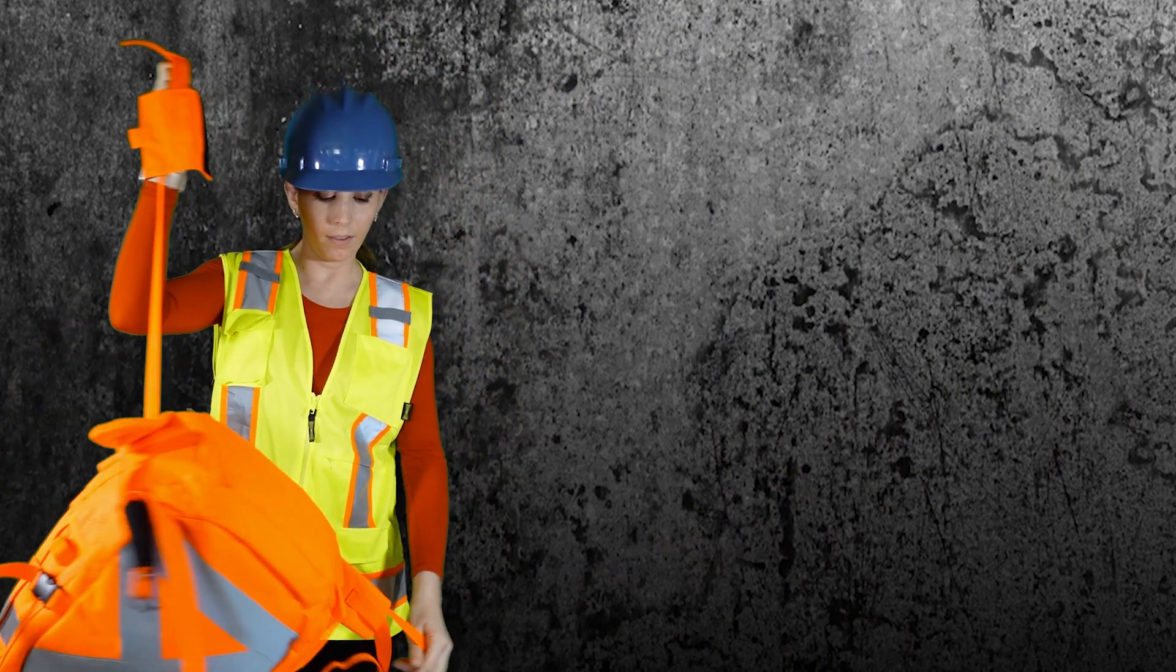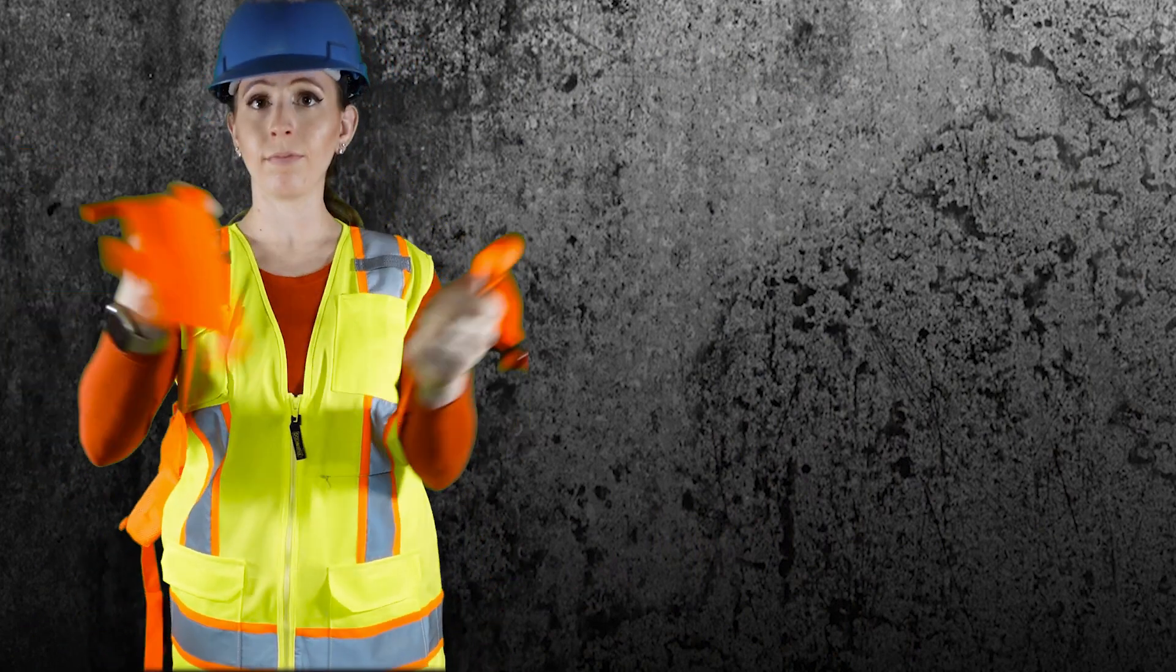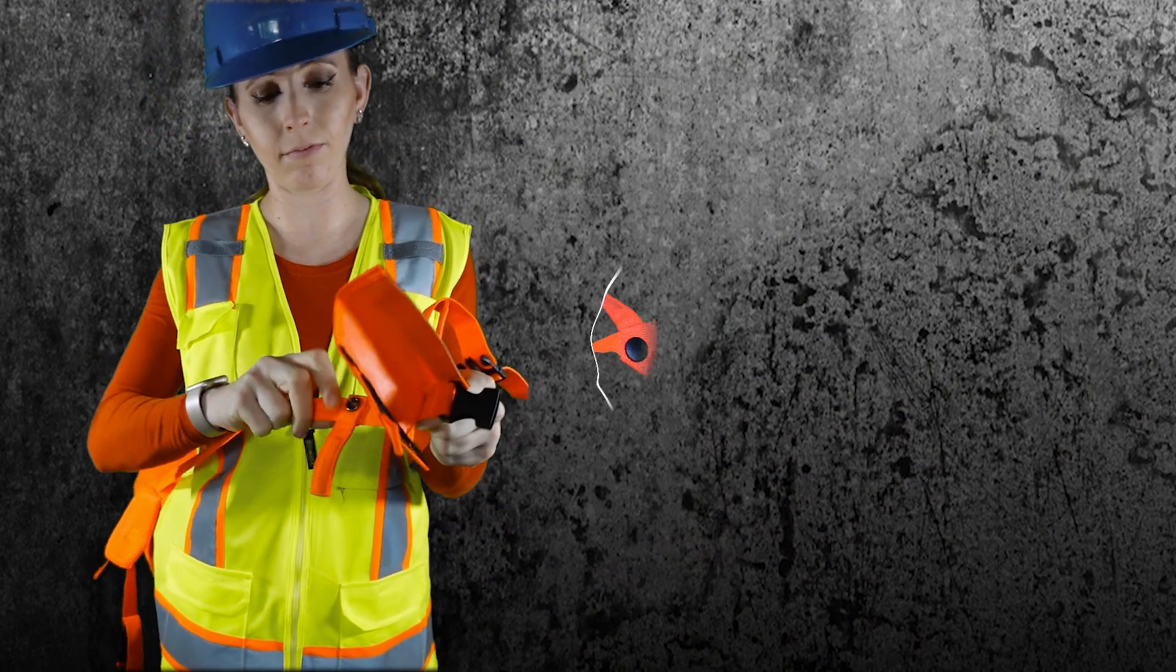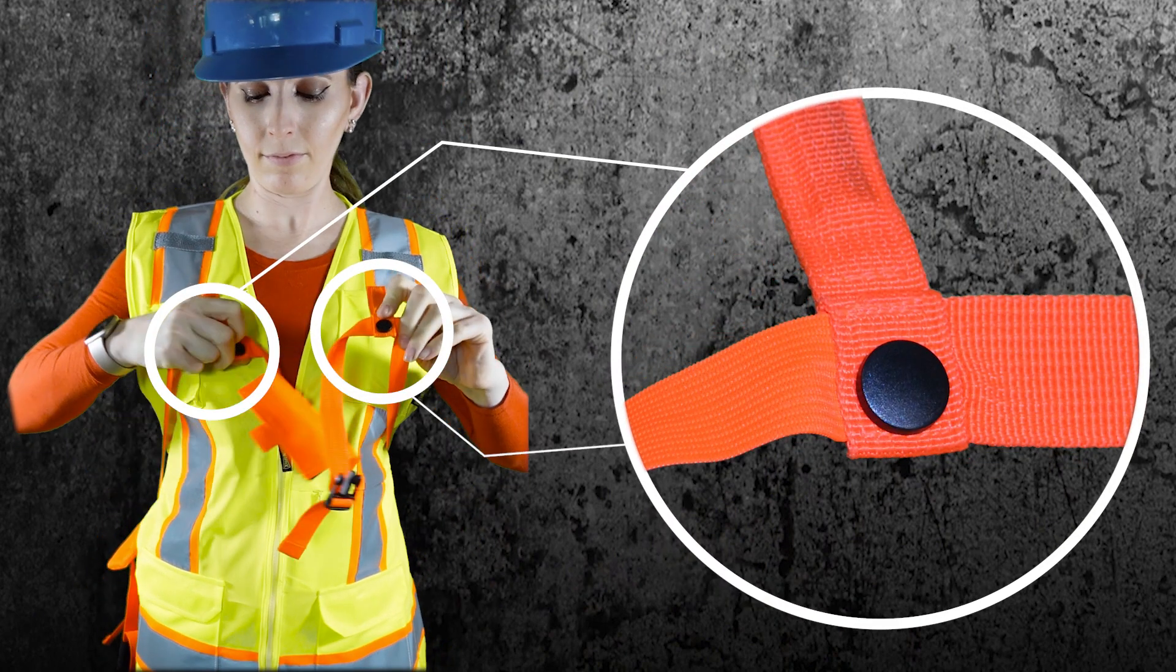First, locate the elastic bands on the backpack. Be sure the black snap covers on the tabs are facing outwards on both sides.